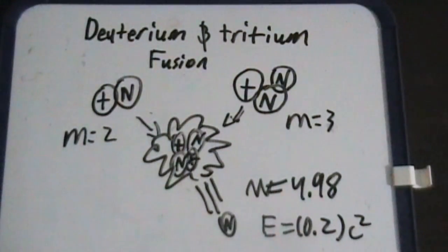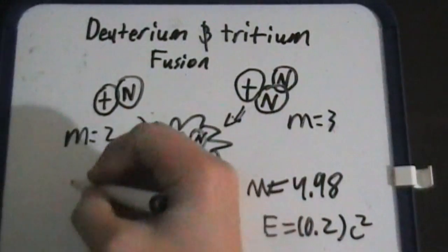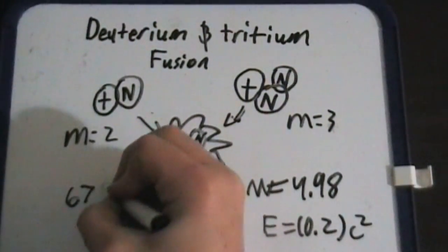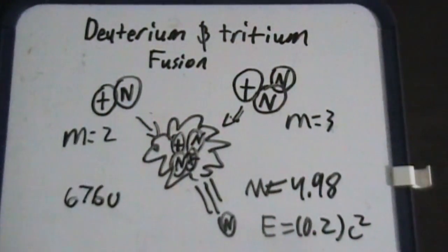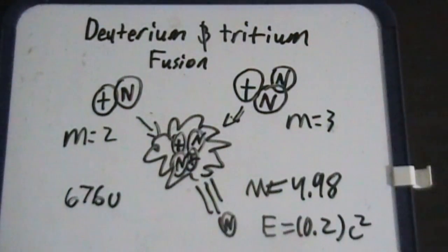So this particular fusion releases 676 units. And a unit is the amount of energy one U.S. citizen uses in a year.